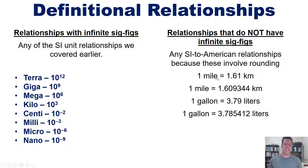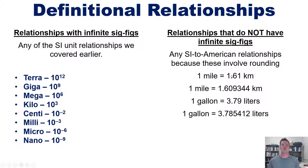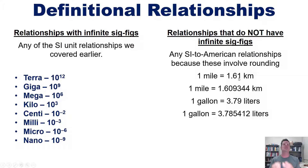When doing SI unit to American unit relationships, always count the significant figures as being determined by the rounded term. For instance, in one mile equals 1.61 kilometers, you might be tempted to think the one on the left limits sig figs. But no — you could write 1.00000000 miles equals 1.61 kilometers and it is the same statement. The limitation comes from the rounded term on the right, not from the left-hand side.